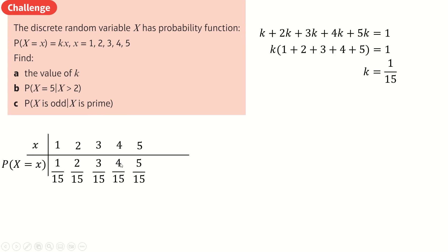Probability of X equals 5 given X is bigger than 2. These are the ones that are bigger than 2. This is the one that's 5. So it's just going to be this. The 15s will cancel. You get 5 over 3 plus 4 plus 5, which is this.